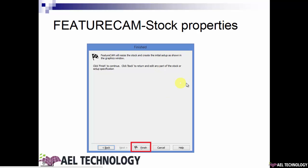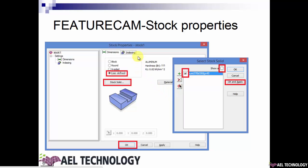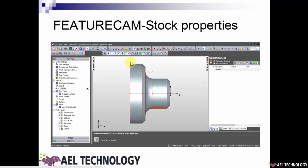In this case, we don't need feature recognition. So double-click on the stock model and go to Stock Properties. Next, click the radio button 'user defined' and click the icon 'stock solid'. Tick 'show all' and you will find that a solid is listed. Select the solid and click OK and Apply. When you click OK, you have just converted the imported model to a stock.